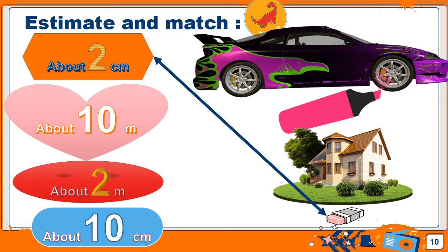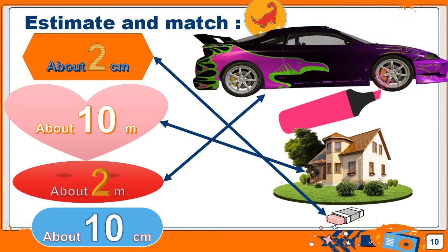The house is big and large, so it is meters. Is it 10 meters or 2 meters? It's not small, so it will be 10 meters. The big car — it is meters, about 2 meters. The pink marker — it is centimeters, so I estimate it as 10 centimeters.